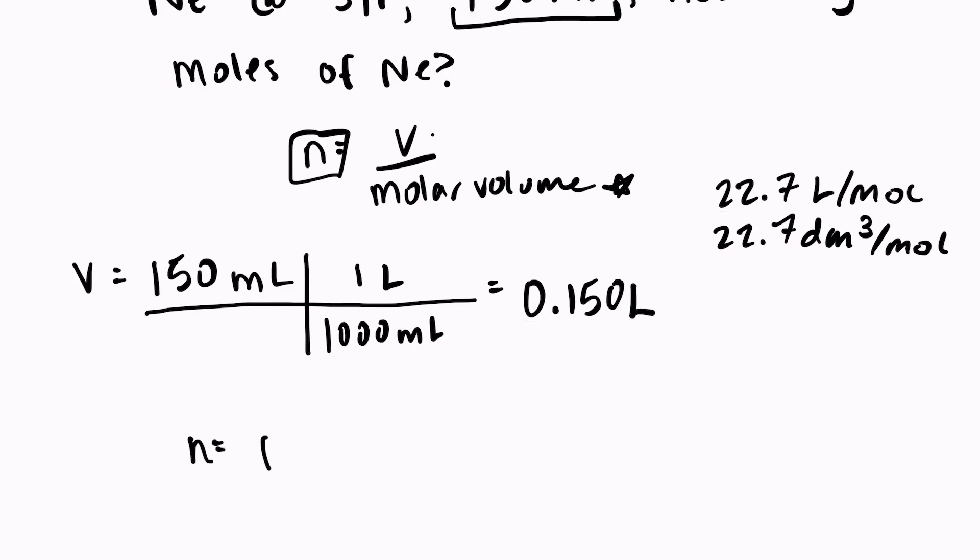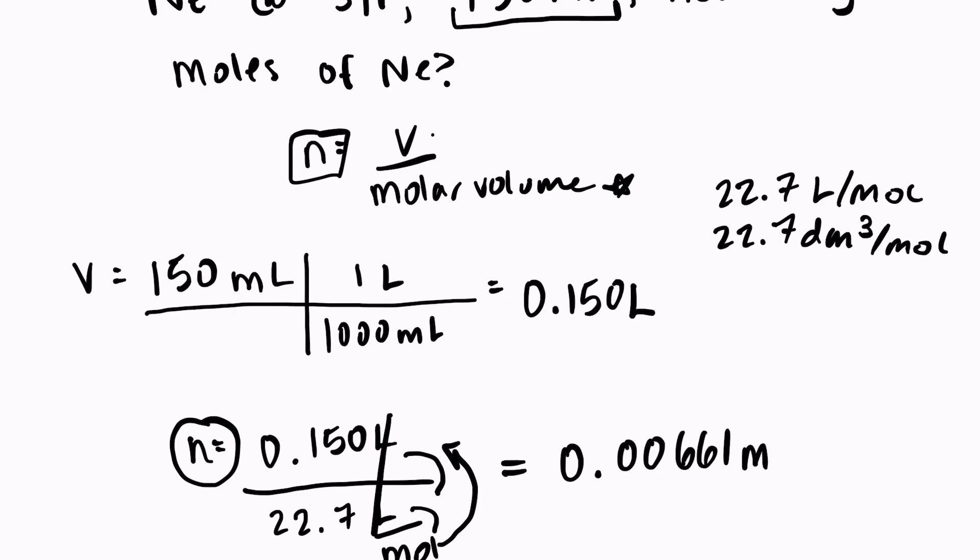So now we can just plug that right into our formula. N is equal to 0.15 liters over 22.7 liters per mole. My liters will cancel out because mole is on the bottom of a fraction that's already under a fraction. So 0.150 divided by 22.7 is 0.00661 moles of neon in a volume of 0.15 liters.